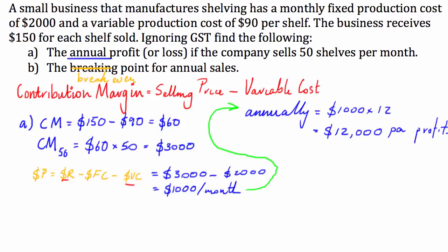Cool. So, basically, the break-even point is when our revenue is equal to the sum of both of our costs. Okay. So, or the way we could think about it, is the break-even point is when the contribution margin of each of our shelves times the number of shelves is equal to our fixed cost. So, we're contributing enough just to cover our fixed costs.